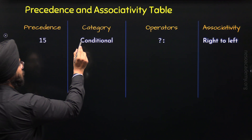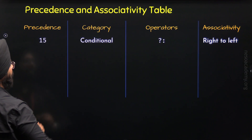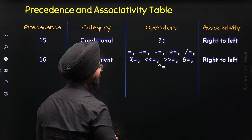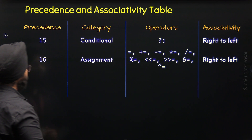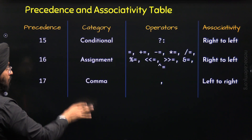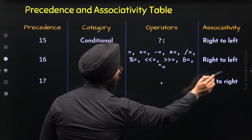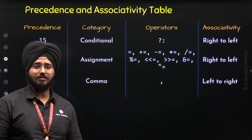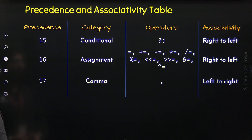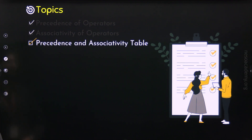The conditional operator has right-to-left associativity. Then we have the assignment category with all assignment operators, also having right-to-left associativity. Finally, the comma operator has the least precedence among all operators, with left-to-right associativity. Some operators in the table have not been studied yet and will be covered later in the course. This completes the precedence and associativity table, and we are done with all the topics of this lecture.